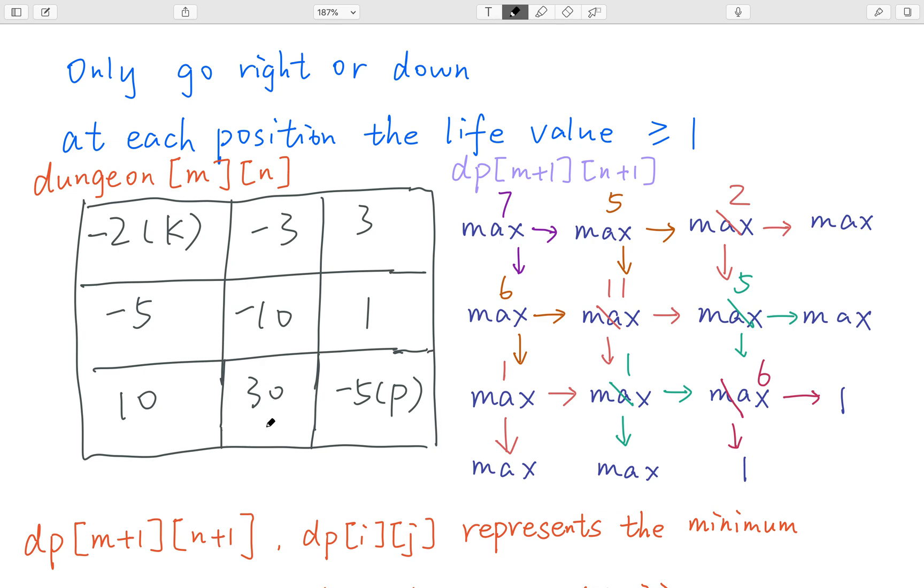And at this place, my health point will be increased by 30. So I will minus 30. And then I get a negative number, which is negative 24. But my health point can never be less than 1. So I just put 1 here.